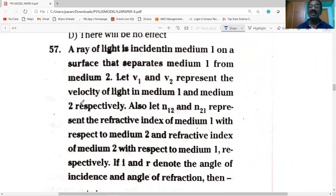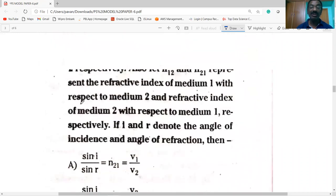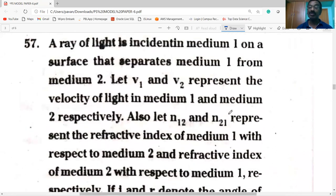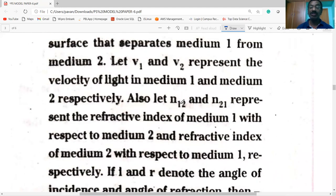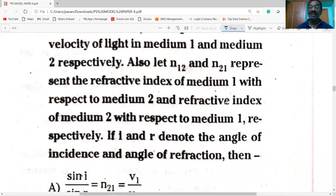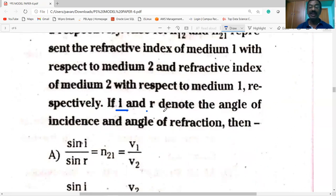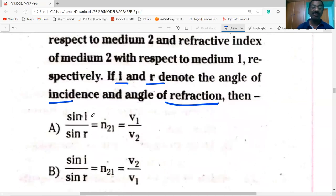The ray of light is incident in medium one on a surface that separates medium one from medium two. Let V1 and V2 be velocities of medium one and medium two. Also let N1-2 and N2-1 be refractive indices. If I and R are denoted as angle of incidence and angle of refraction, you know that sin I by sin R is equal to N21 and that is equal to V1 by V2. Option A is correct.